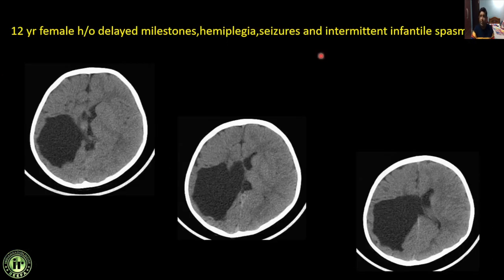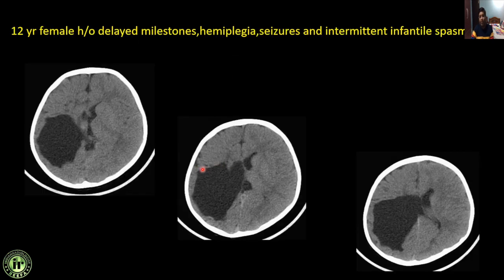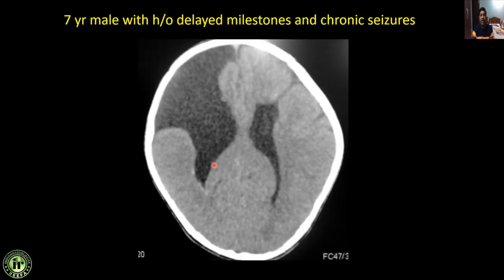Next: a 2-year female with delayed milestones, hemiplegia, seizures, and intermittent infantile spasms. There is a CSF signal intensity lesion in the right temporal lobe communicating with the lateral ventricle — a classical case of porencephalic cyst. A 7-year male with delayed milestones and chronic seizures shows a CSF density cystic lesion communicating directly with the right lateral ventricle, and an abnormal CSF cleft partly communicating with the left frontal horn — a classical case of open-lipped and closed-lipped schizencephaly in a single case. Schizencephaly is lined by abnormal gray matter, whereas a porencephalic cyst is lined by abnormal white matter.